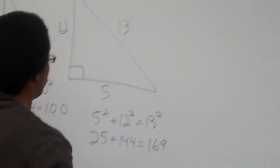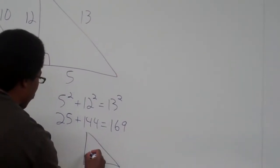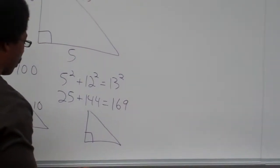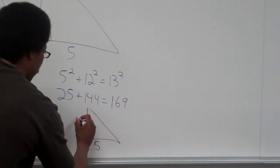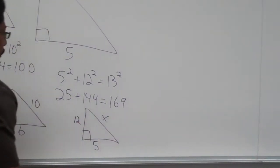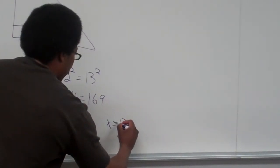And on here, a 5, 12, 13. If you saw this on a test, excuse my poor drawing, but if you had 5, 12, and X, X equals 13.